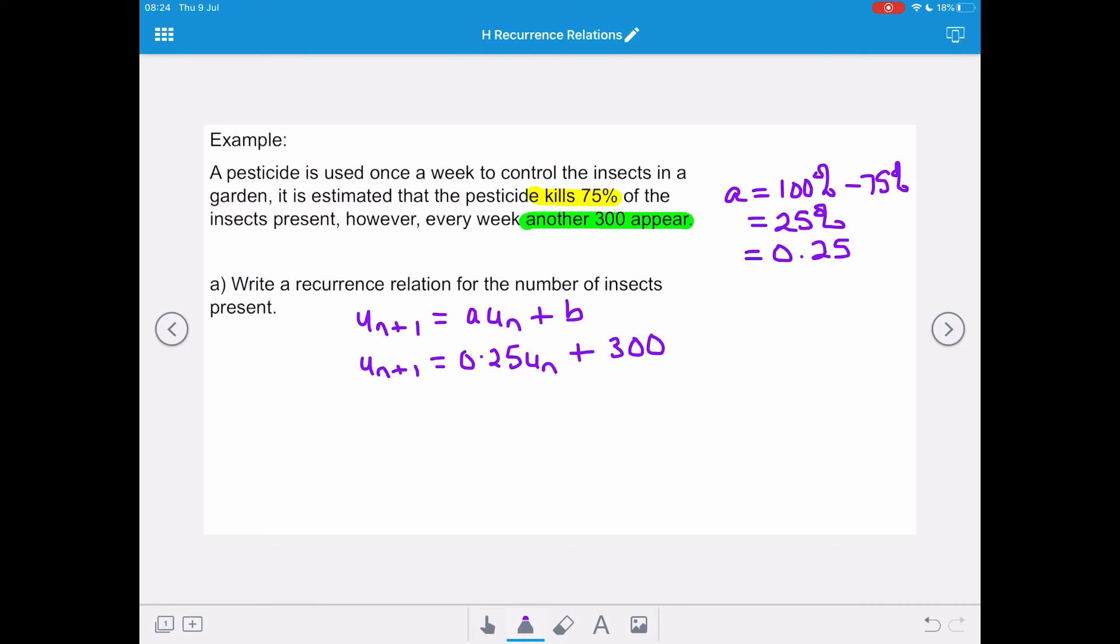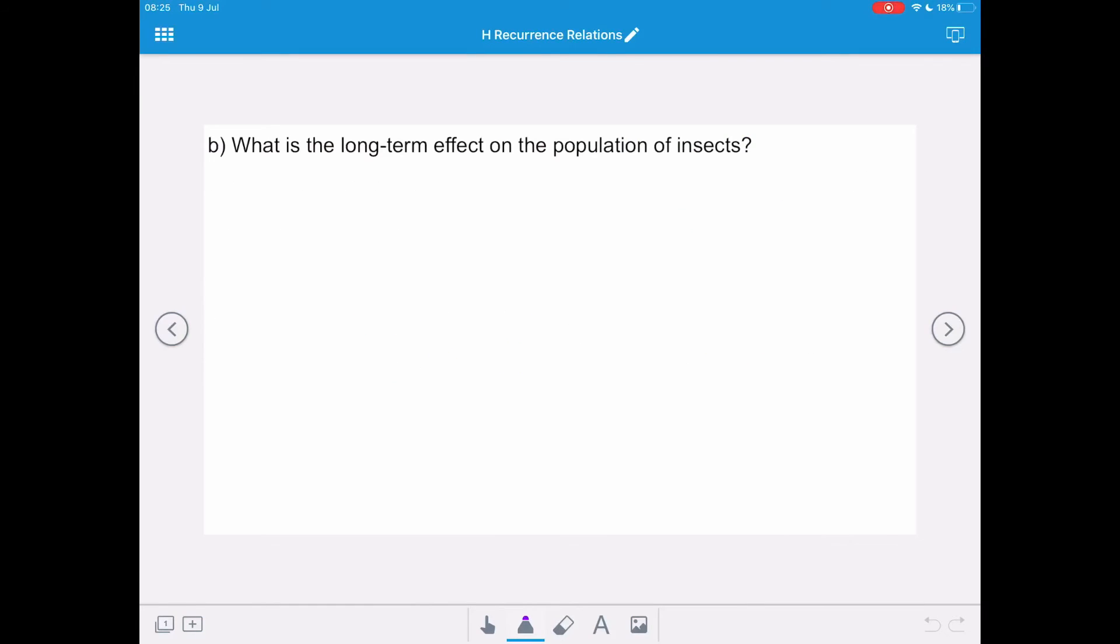The start value for this recurrence relation, u₀, is going to be 0. So now that we have our recurrence relation, we want to know what is the long-term effect on the population of the insects. So if we rewrite our recurrence relation, we've got un+1 equals 0.25un plus 300, and our start value u₀ is 0.